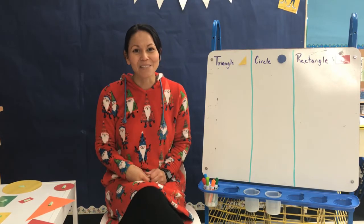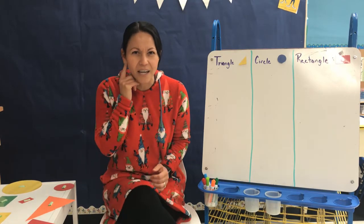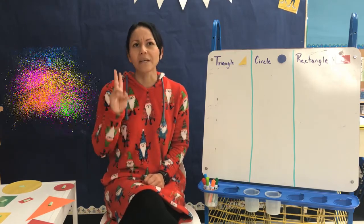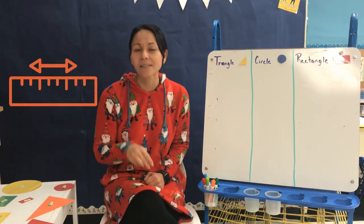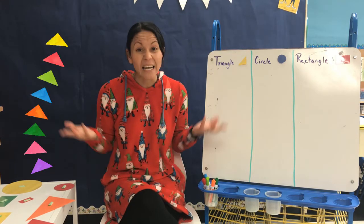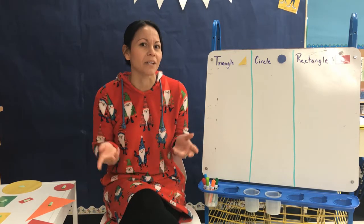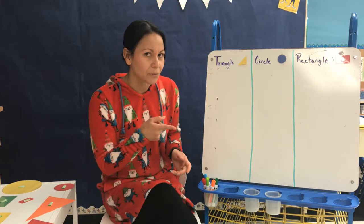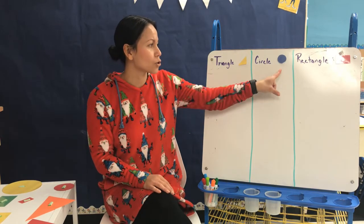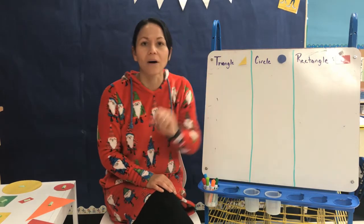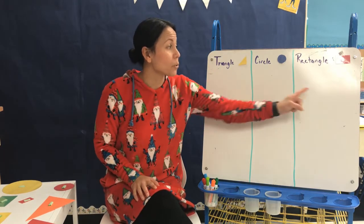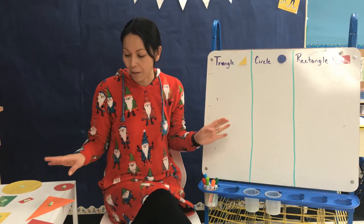Great job singing. So did you hear the song say we can sort by color, we can sort by size, and we can sort by shape any old type? So let's try something. Last week we learned the triangle, circle, rectangle. I'm going to get some shapes and we're going to sort them by shape.